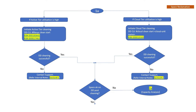Space reclamation basically means that the DD cleaning process is the one responsible for reclaiming space on data domain against the expired backups. If active tier utilization is high, we will initiate cleaning on the active tier, and if cloud utilization is high, we will initiate the cleaning on the cloud tier.